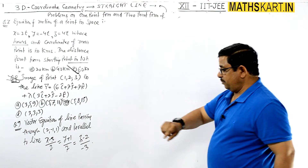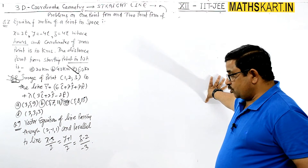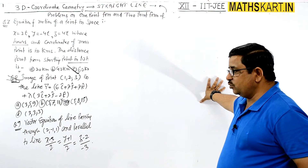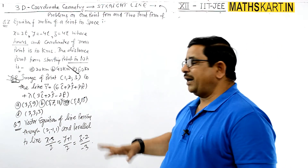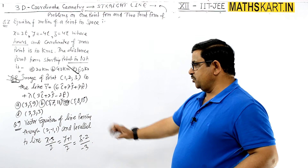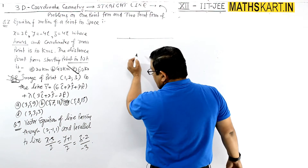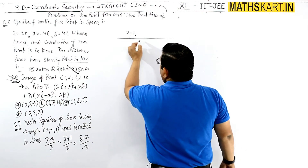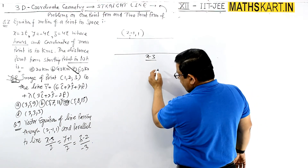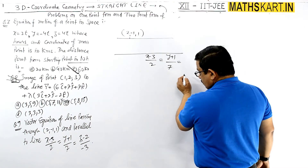Question number 9: find the vector equation of a line passing through point (2, −1, 1) and parallel to the line (x − 3)/2 = (y + 1)/7 = (z − 2)/(−3). Because the required line is parallel to this given line, the parallel vector (direction vector) of both lines will be the same.